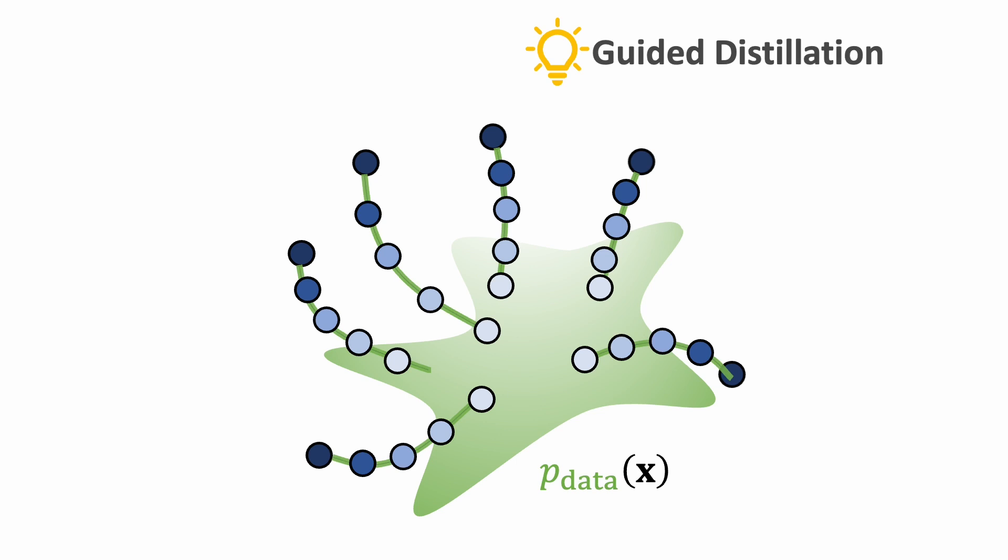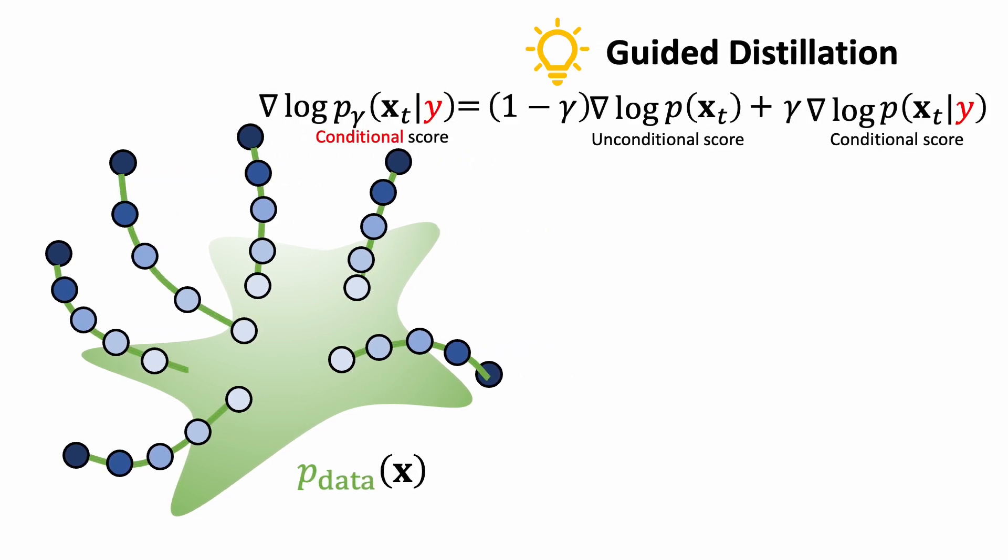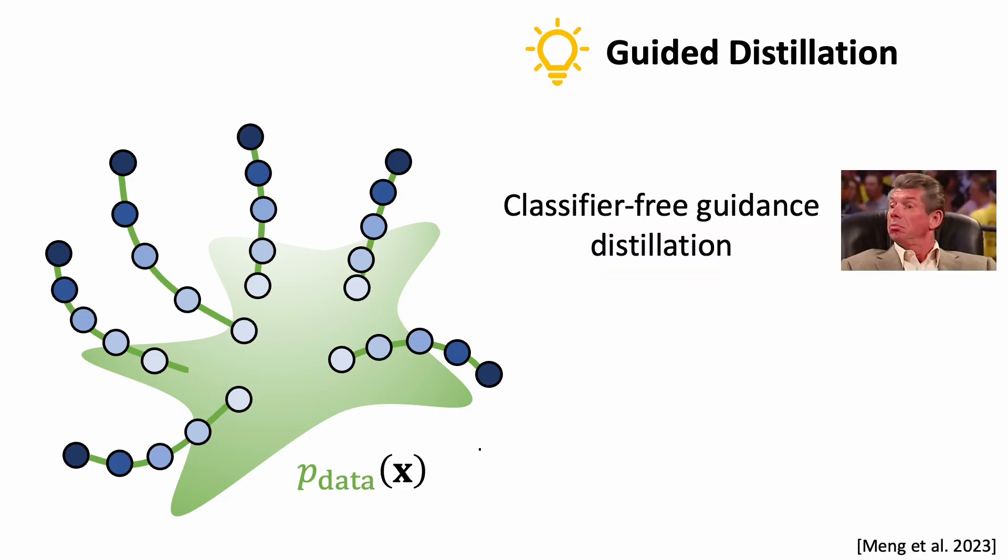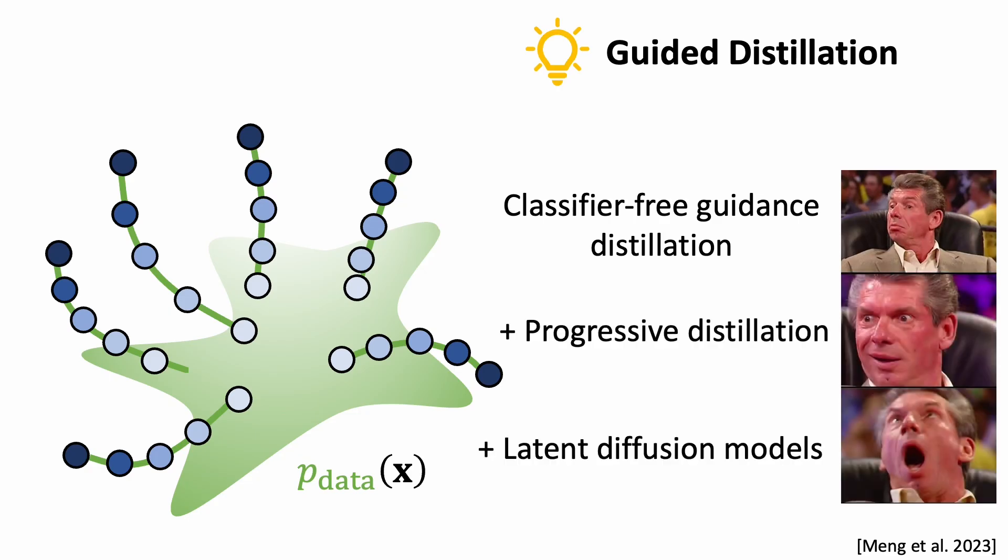Another idea is to distill classifier-free guided diffusion that requires evaluating both conditional and unconditional models into one single model. We can further apply previous ideas to make it faster, such as progressive distillation and latent diffusion models.